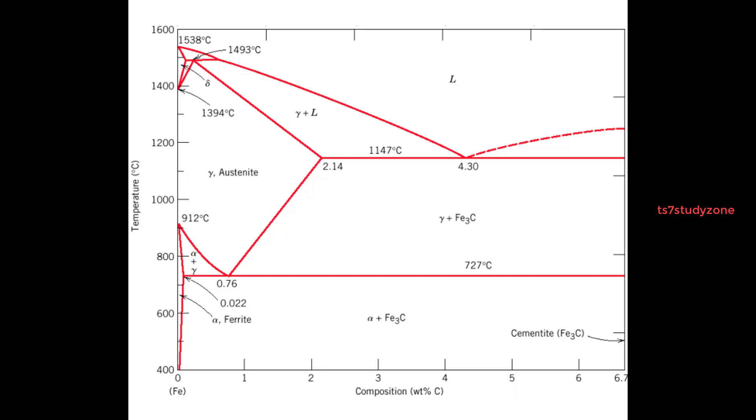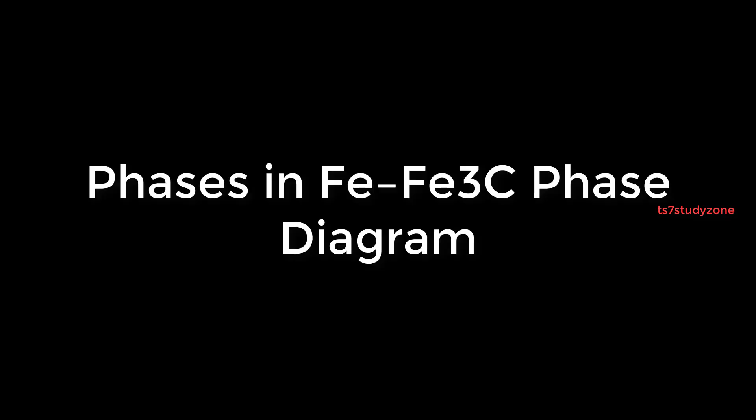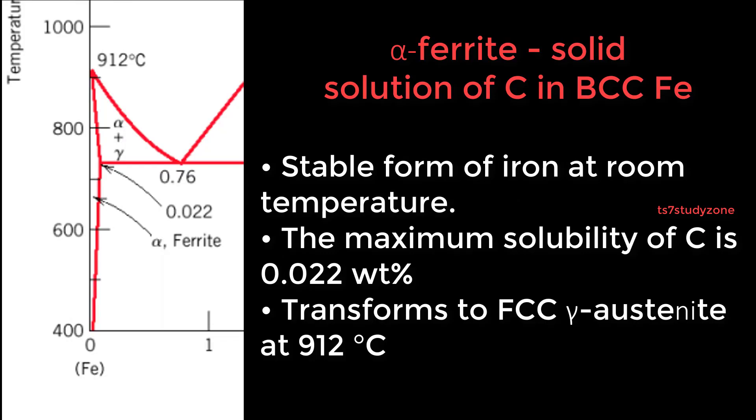Phases in the Fe-Fe3C phase diagram: Alpha ferrite is a solid solution of C in BCC Fe, the stable form of iron at room temperature. The maximum solubility of C is 0.022 weight percent. It transforms to FCC gamma austenite at 912 degrees Celsius.